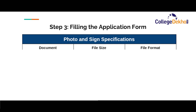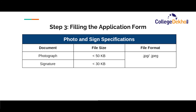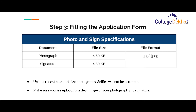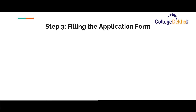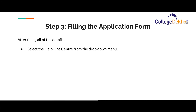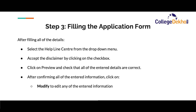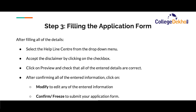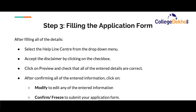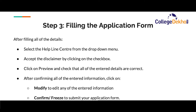You must upload a recent passport size photograph in the application form. Selfies taken through mobile phone or any other means will not be considered valid. When uploading the photograph and signature, make sure the images are in JPG or JPEG format, with file size less than 50 KB for the photograph and less than 30 KB for the signature. After filling all details and uploading the documents, you must select the helpline center. Accept the disclaimer by clicking on the checkbox and then click on the preview button. Carefully check all entered information for any spelling errors, typos or inconsistencies. If changes are needed, click on the modify button. When all information is correct, click on the confirm button to submit your application form.